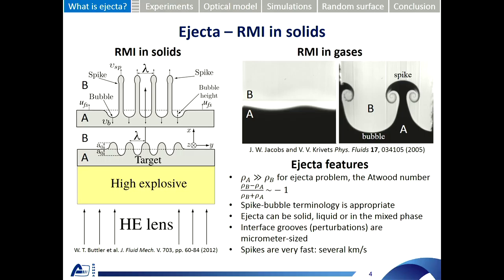In the last decade, the theory of ejecta phenomena became based on the Richtmyer-Meshkov instability. It was considered as a special case of Richtmyer-Meshkov instability in solids, where the density of medium A is much bigger than density of medium B, so the Atwood number is approximately minus one. Researchers began to use spike-bubble terminology for the ejecta process, and these jets are called spikes, with bubbles appearing between them, similar to the original Richtmyer-Meshkov instability in liquids and gases.